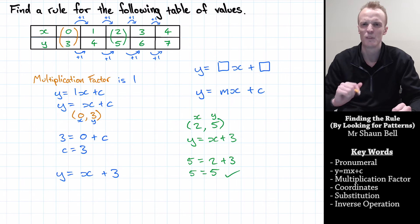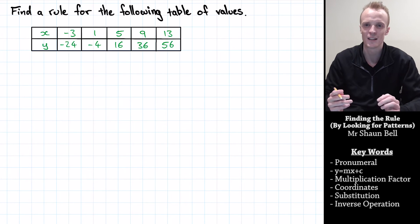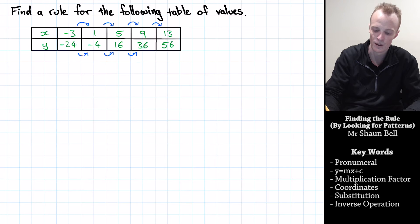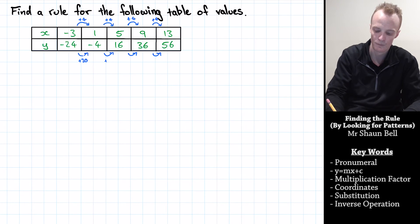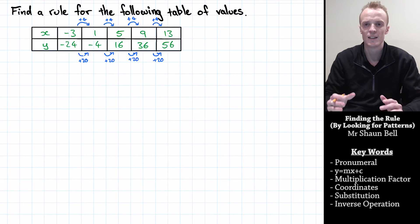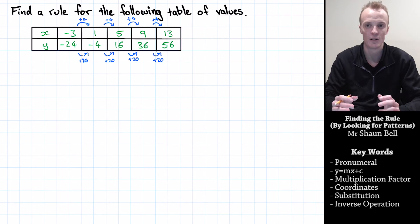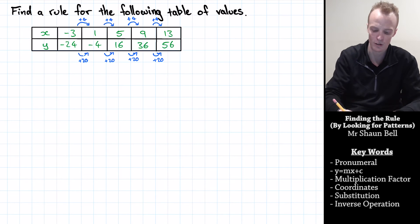Let's practice that again with a new problem. In front of me is another table of values. We'll start by checking it's a linear relationship by looking at the difference in x at each step against the difference in y at each step. The difference in x at each step is plus 4, and the difference in y at each step is plus 20. Because the change in the y value is the same for every four steps of the x value, we do have a linear relationship occurring, so we also must have a multiplication factor.